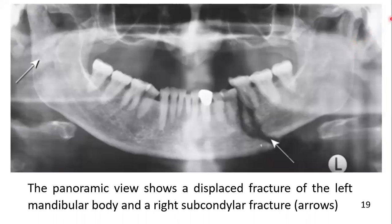Now let's see the significance of two radiographs taken at 90 degrees to each other, and the significance of the reverse Towne view with respect to the OPG. Here you can easily appreciate the fracture in the body area and also a fracture in the subcondylar area.